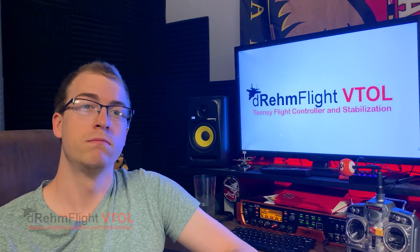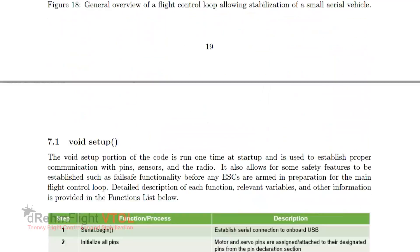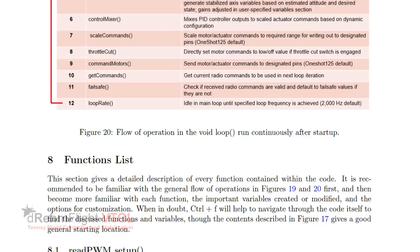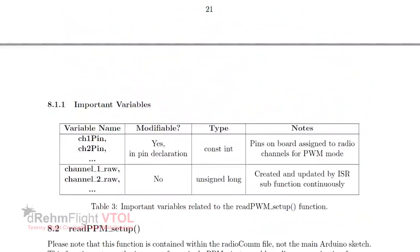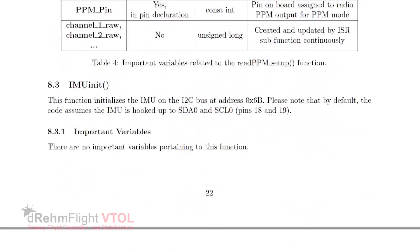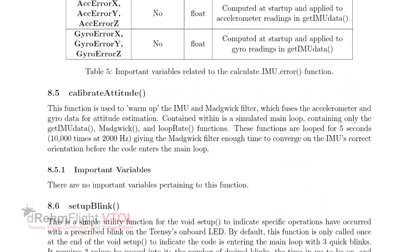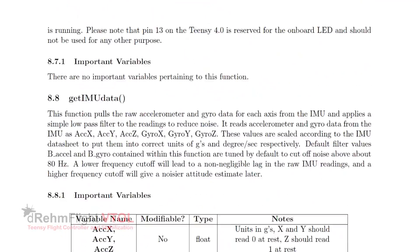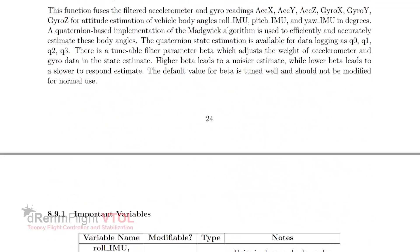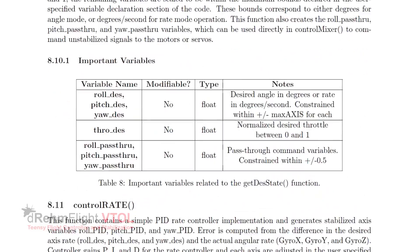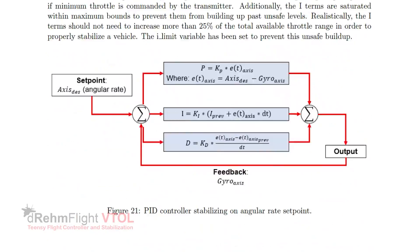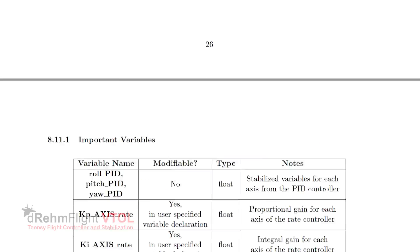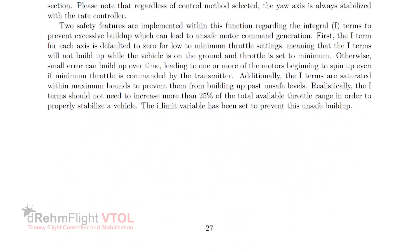Do you know a little bit about Arduino? Great! The documentation will walk you through how the code works — which is less than 800 lines — and how to work with it. Every variable is available to you along with options for controller types, and of course your fully custom mixing.